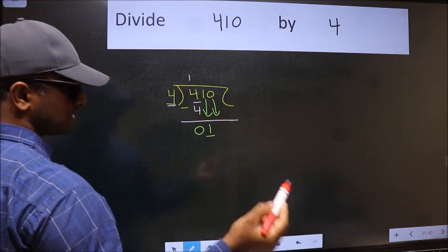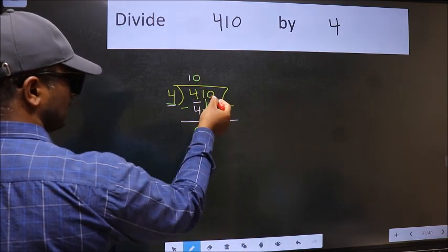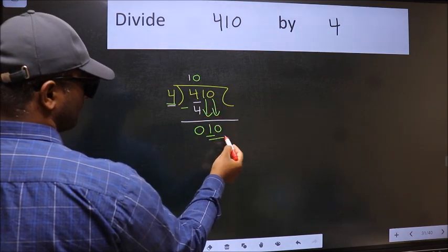And the rule to bring down the second number is we should put 0 here. Then only we can bring this number down. Now 10.